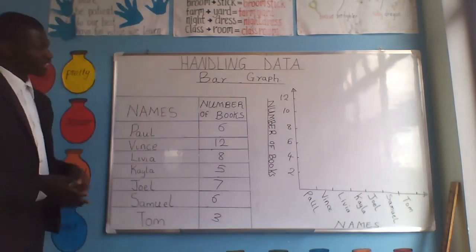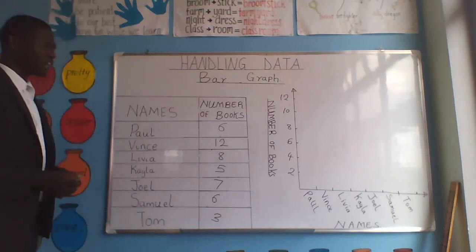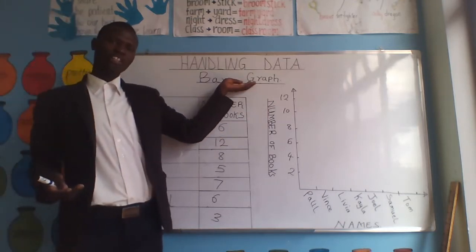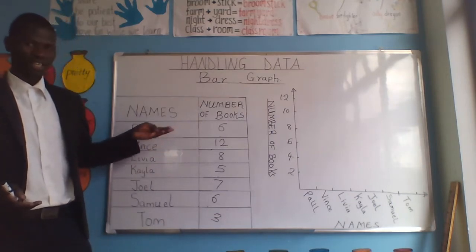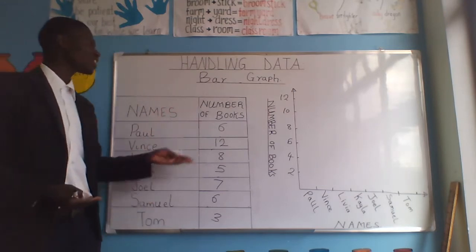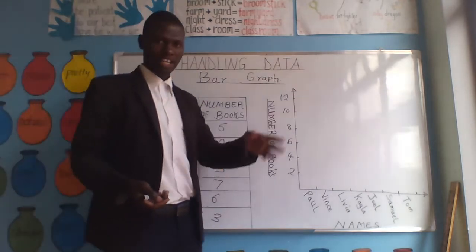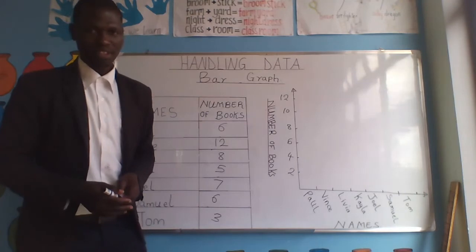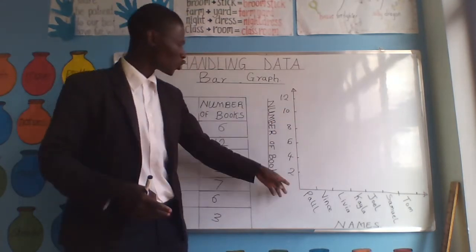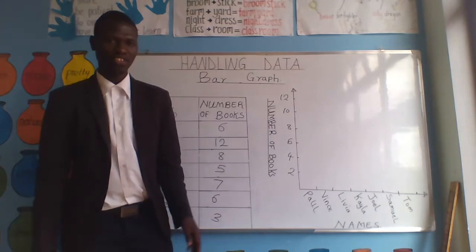I should have given you the frequency table like this. You have been given the frequency table. Now you need to prepare the bar graph for the frequency table given. We have our data — the names of the students and the number of books they have. We need to represent this information in a bar graph. A bar graph has a horizontal line and a vertical line, as you can see here.